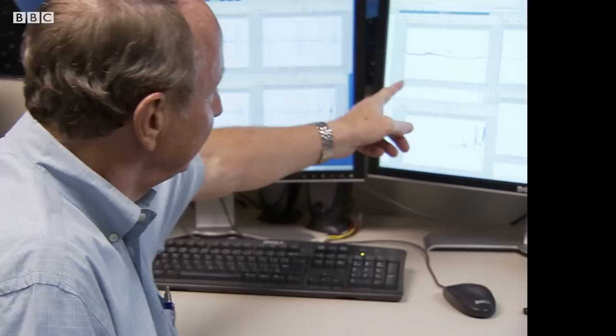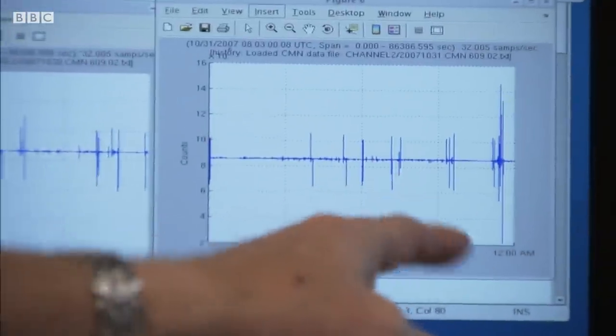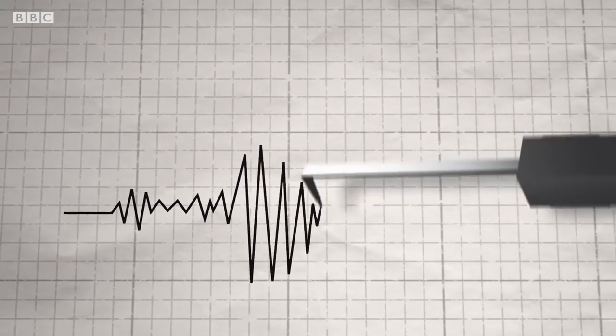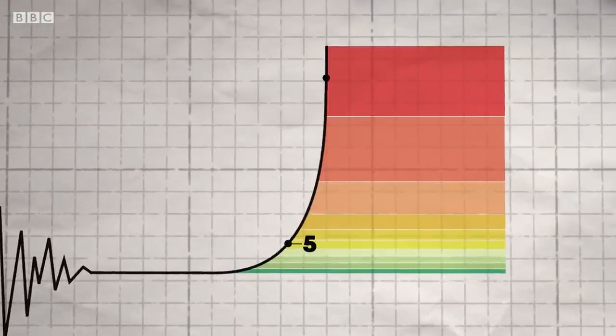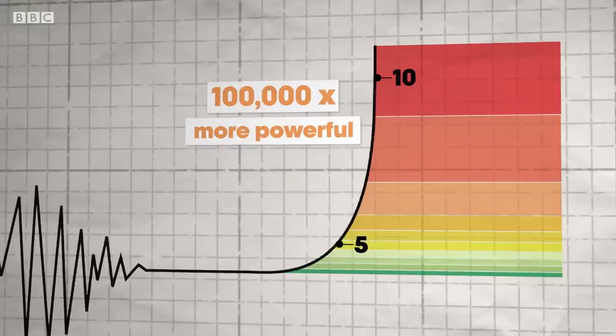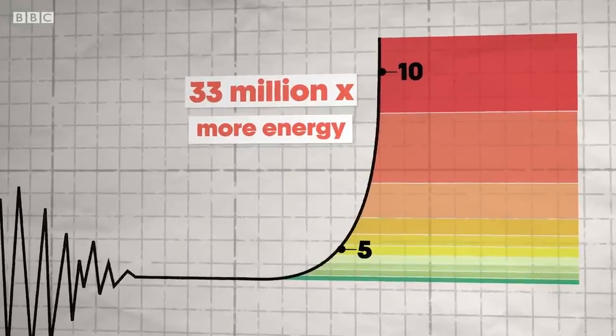But why does the severity of earthquakes seem to increase so dramatically as we enter those higher magnitude numbers? The Moment Magnitude Scale is logarithmic, and what this means is that for every unit of magnitude you go up, the amount of ground shaking increases by a factor of 10. So a magnitude 10 earthquake is not just double the power of a magnitude 5 — it would actually be 100,000 times more powerful, and release more than 33 million times more energy. So the numbers can get really big, really fast.